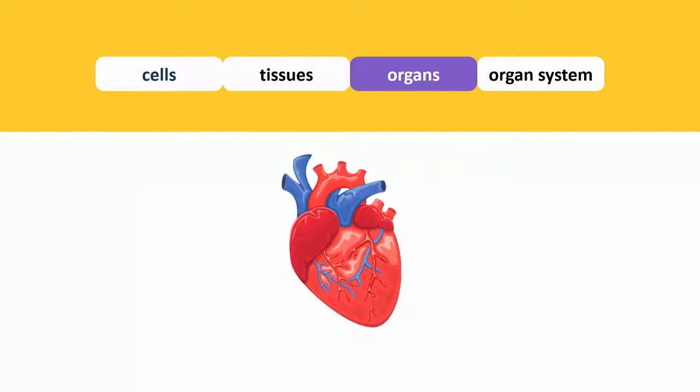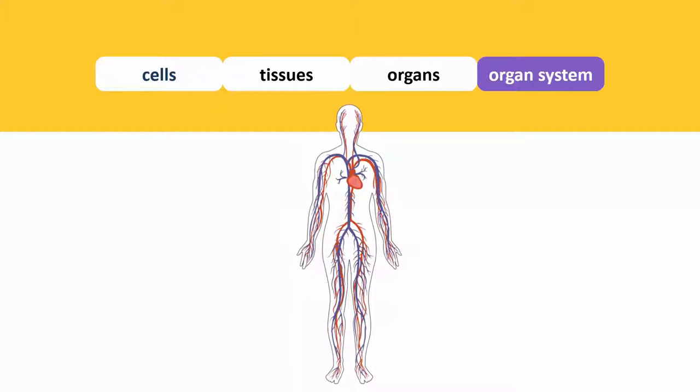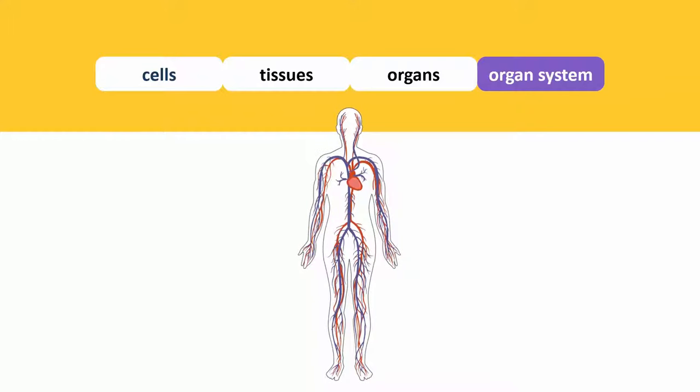Many different organs come together to make up an organ system which carries out a specific process in our body. For example, the heart and blood vessels make up the circulatory system. The circulatory system in our body is responsible for transporting oxygen to every part of our body through blood.